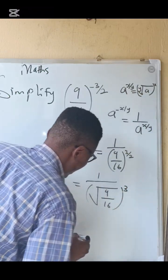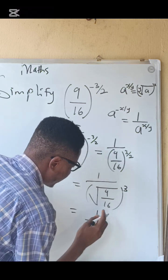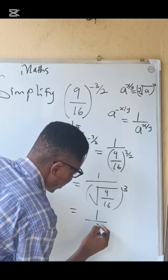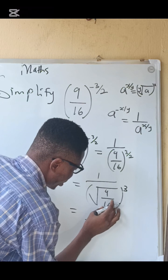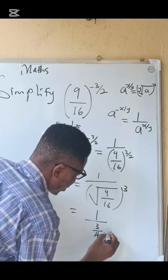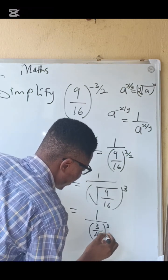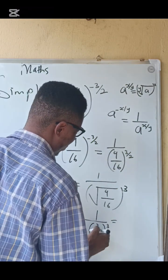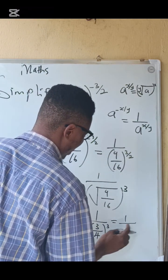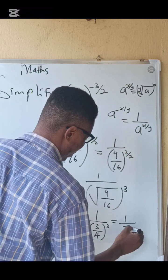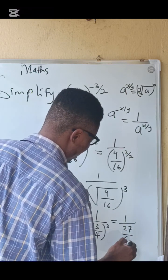So we now have 1 over: the square root of 9 is 3, divided by the square root of 16 is 4. That then equals 1 over: 3 cubed is 27, divided by 4 cubed is 64.